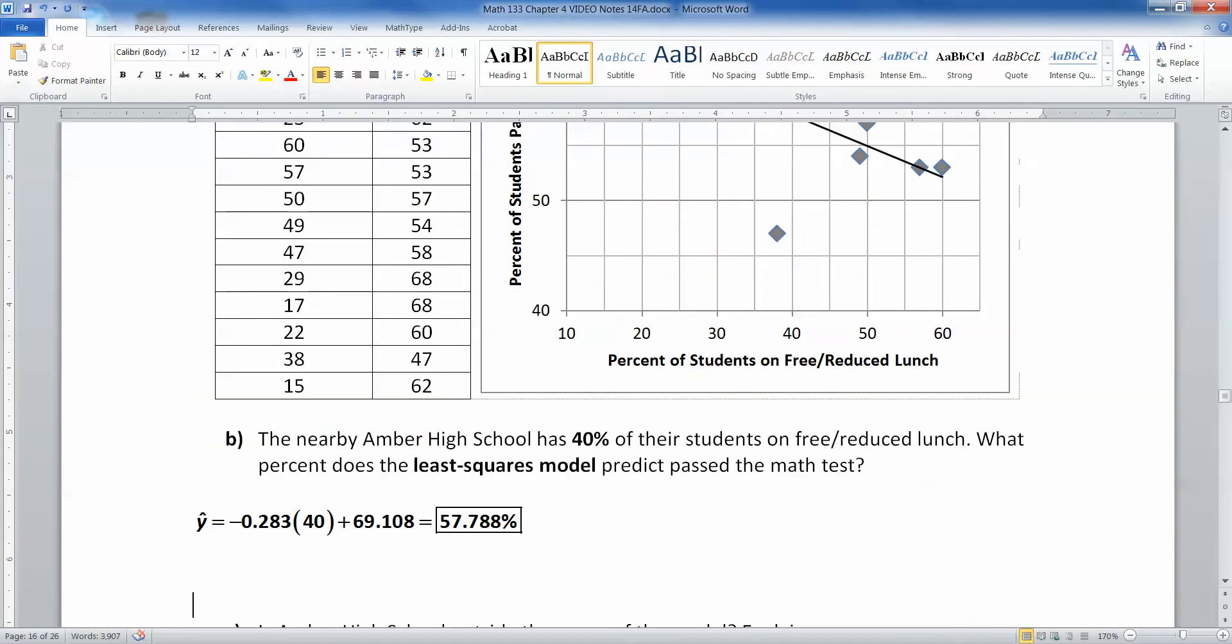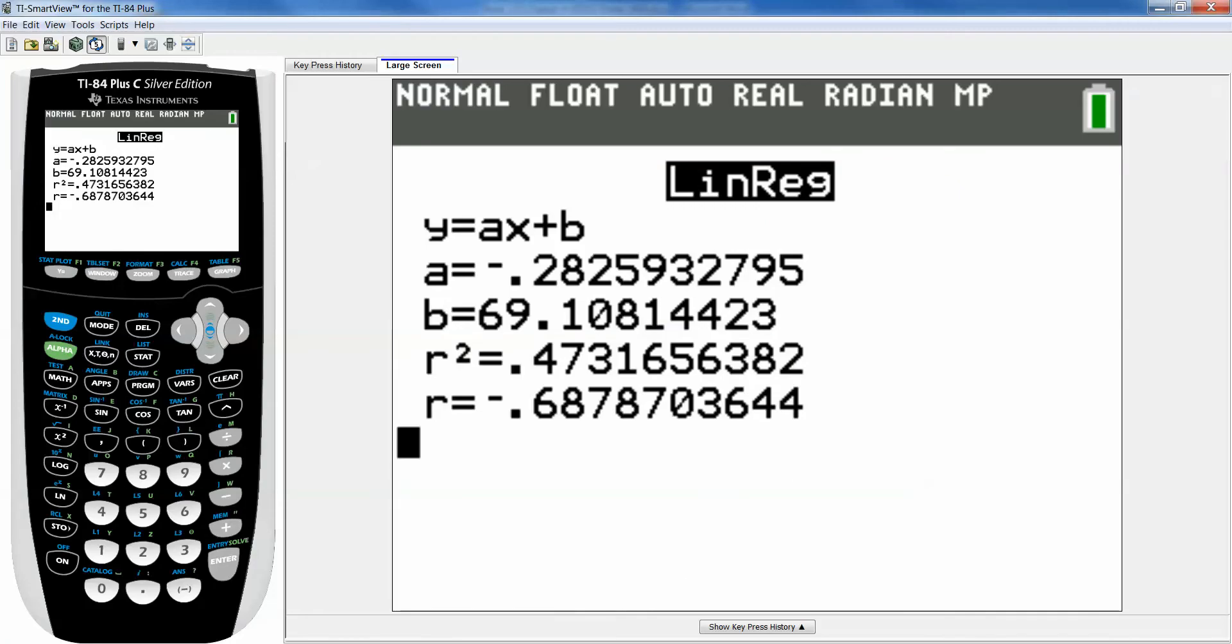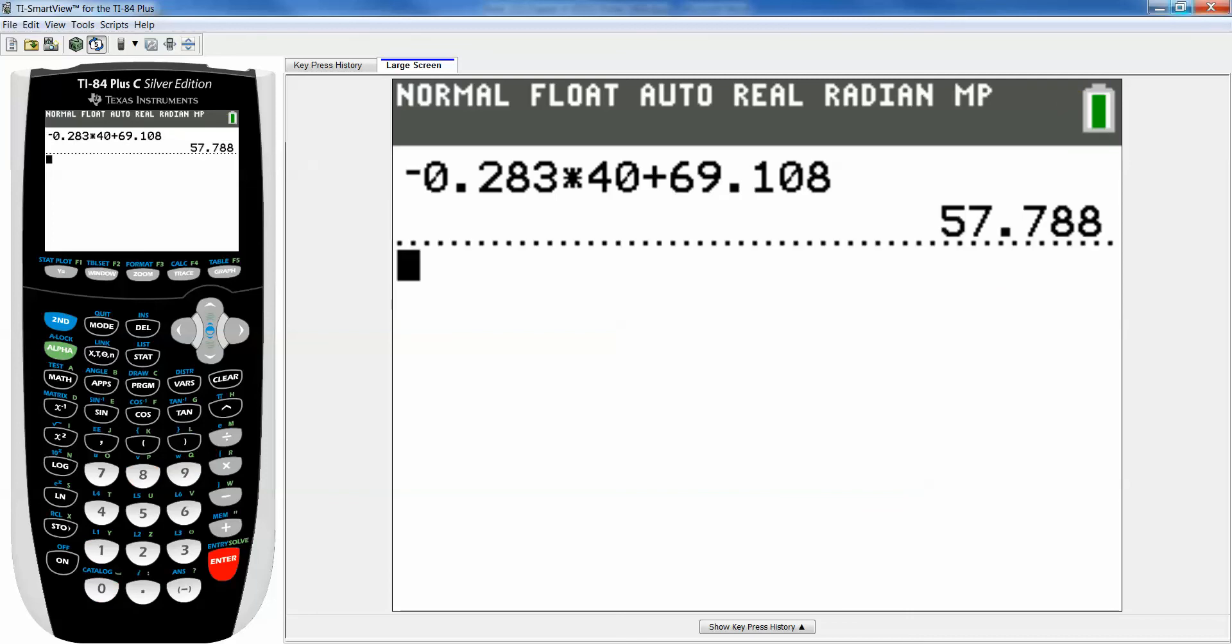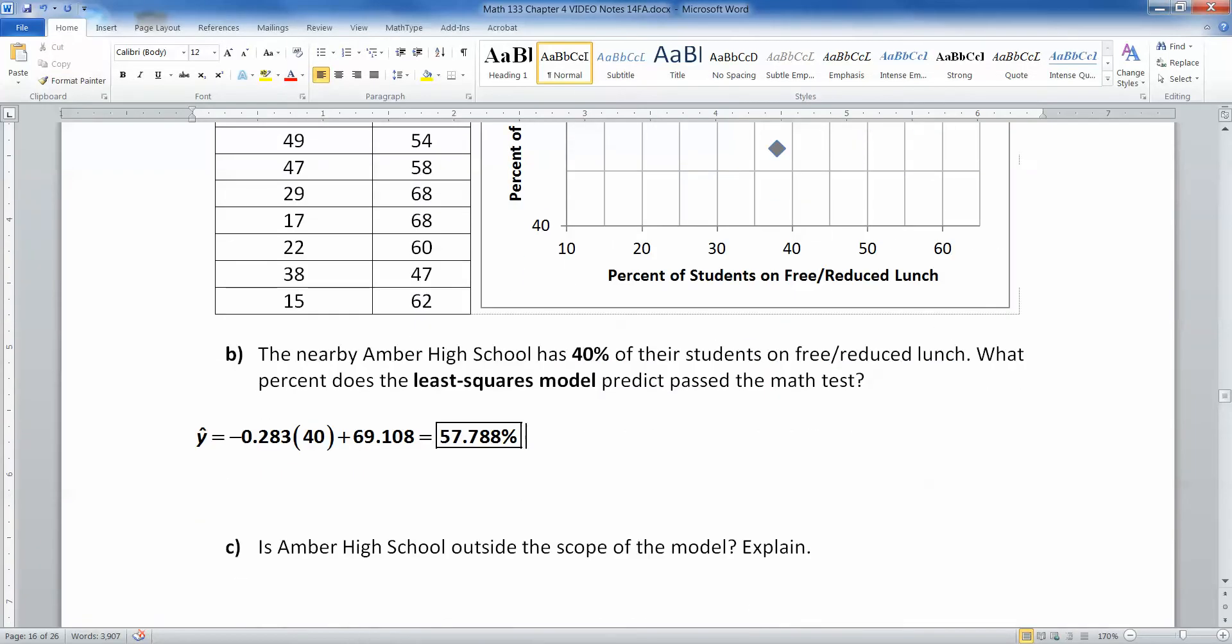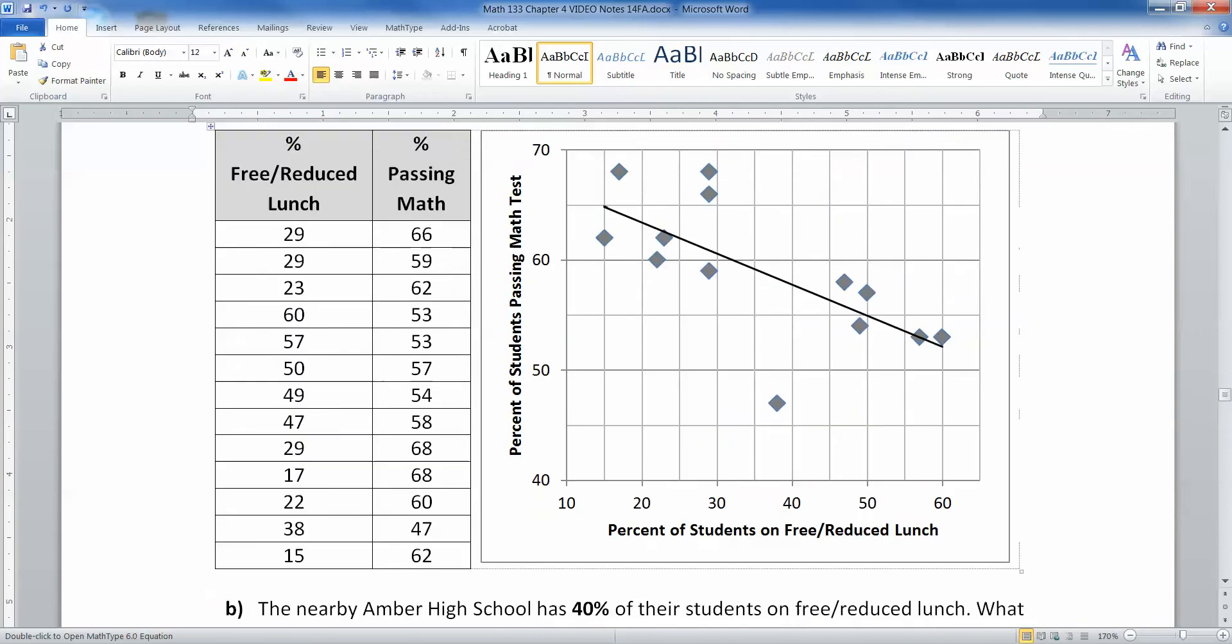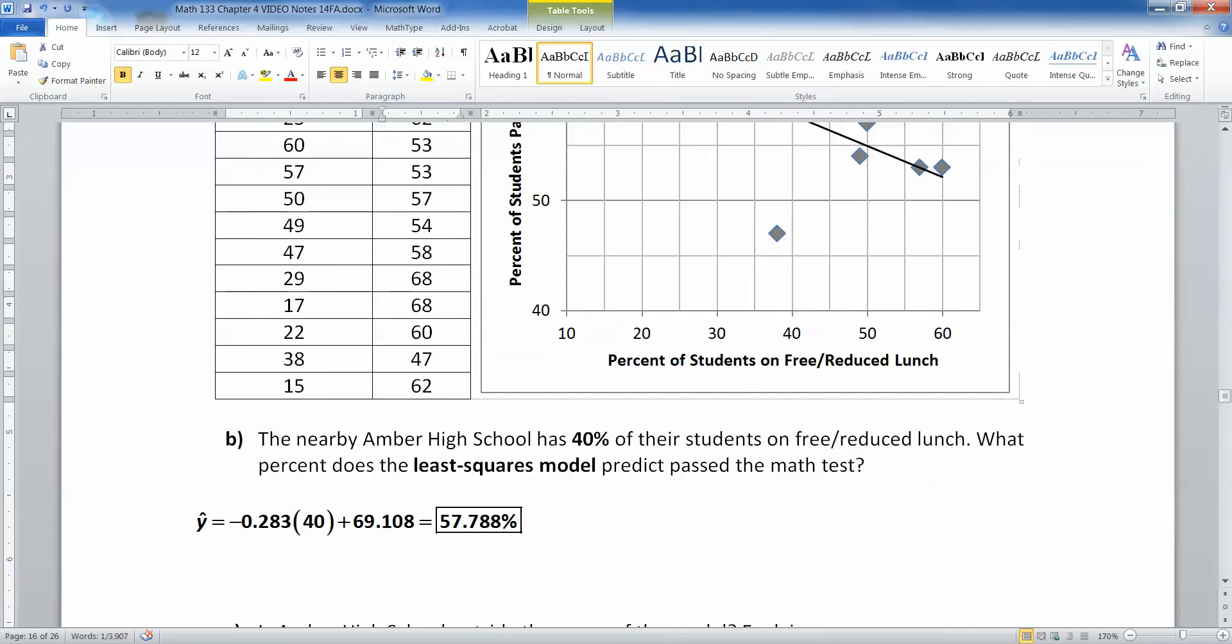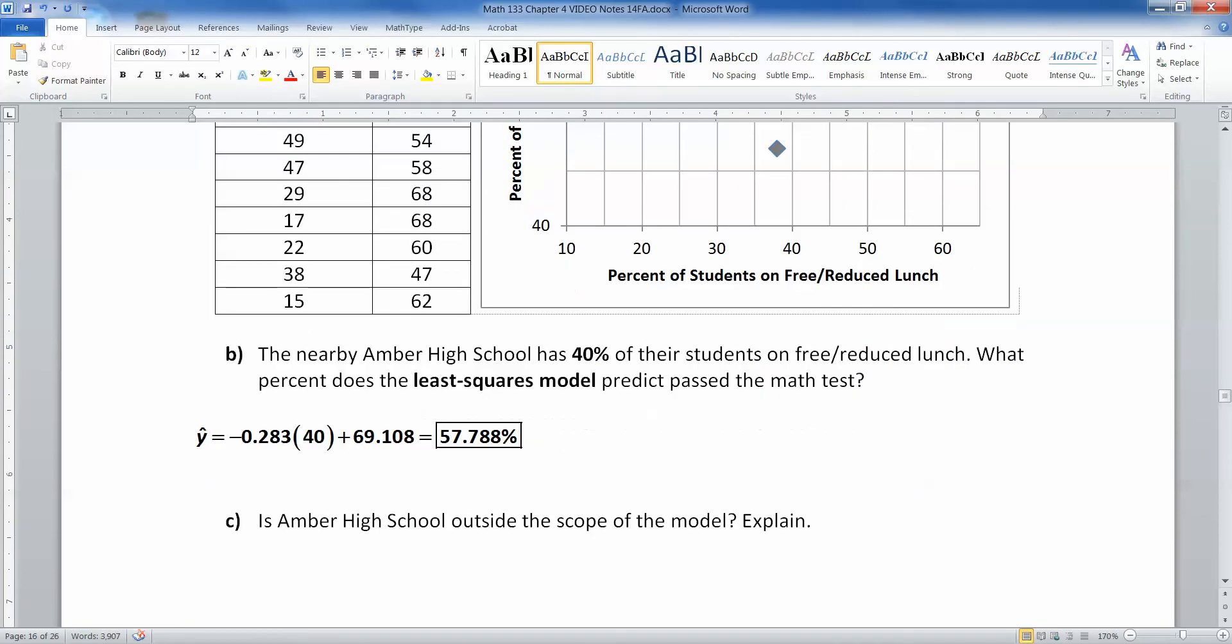And there we have it. Negative 0.283 times 40 plus 69.108. So negative 0.283 times 40 plus 69.108, and we get 57.788, which is what I just said here. And of course the unit here is percent because it says right here at the top of the Y variable that the unit is percent. So we would predict that if the school has 40% on free reduced lunch, 57.78% passed the math test.